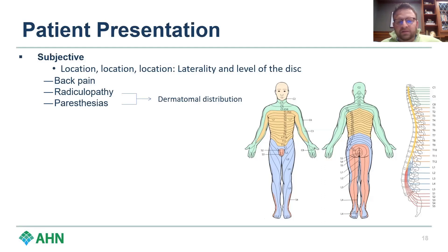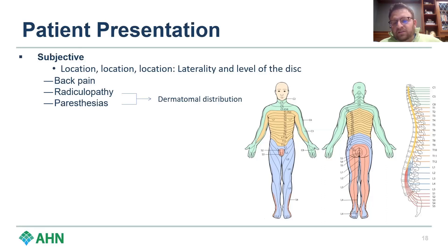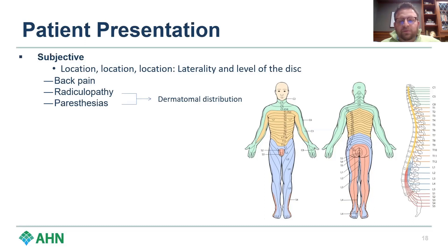You want to be in the ballpark but not necessarily exact. L5 covers the anterior shin, top of the foot, into the bottom of the foot. S1 is classically down the back of the leg into the lateral aspect of the foot. L4 comes across the knee, and L3 is in the anterior thigh — those are important locations to remember.